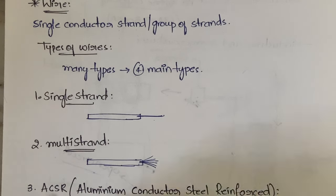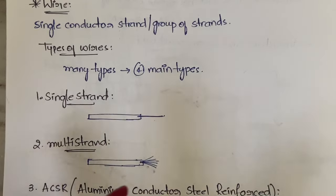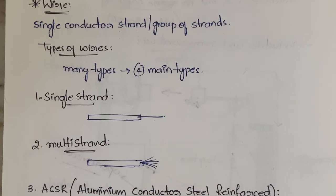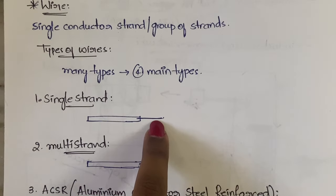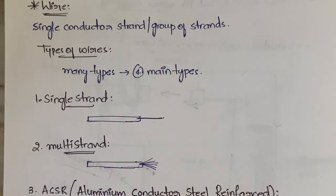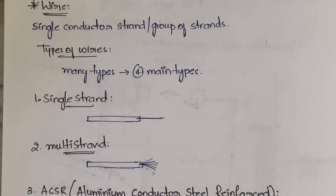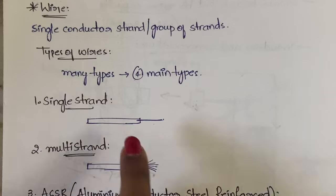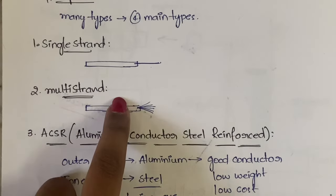The first type is a single strand wire. Inside that wire you will have only one copper wire — just one thin wire of copper inside. Usually when we observe electrical wires, we see many copper or steel or aluminum silver strands inside, but in single strand there is only one strand. Those are called single strand wires.